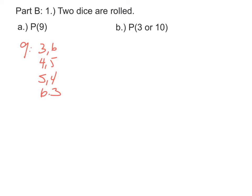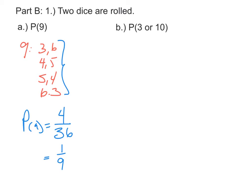So when we want to find the probability of getting a 9, it's going to be the ratio of successful outcomes — and that's all four of these — to the number of possible outcomes. There are 36 possible outcomes when two dice are rolled. Then you should reduce your fraction and simplify it into 1 over 9.